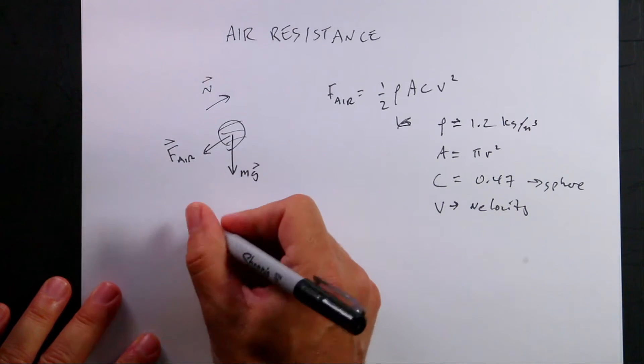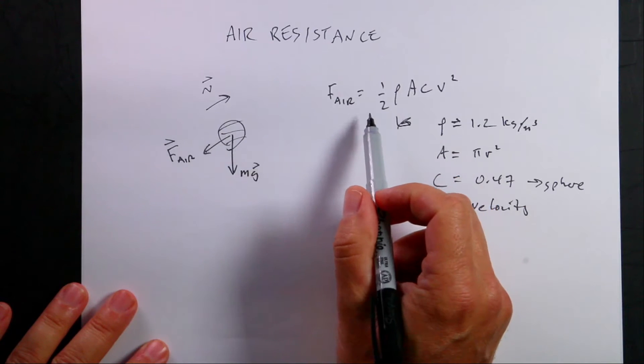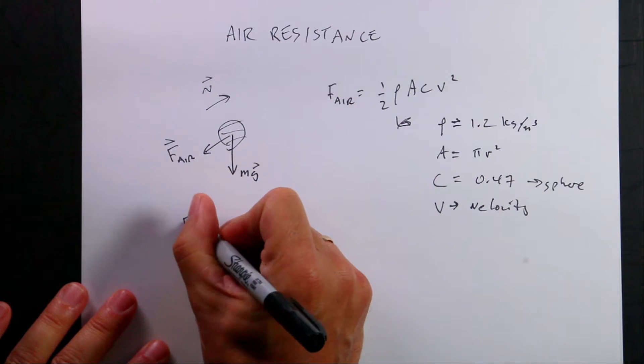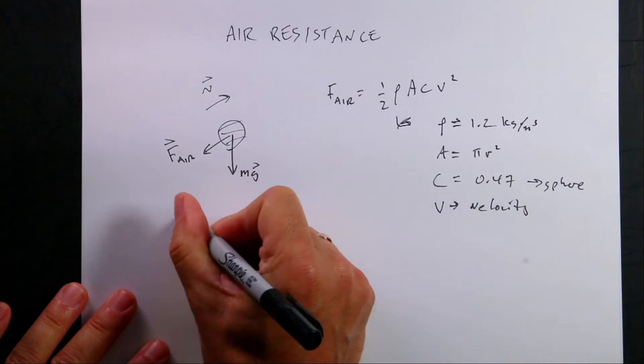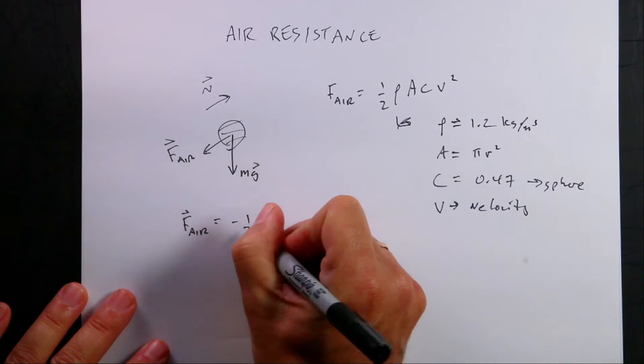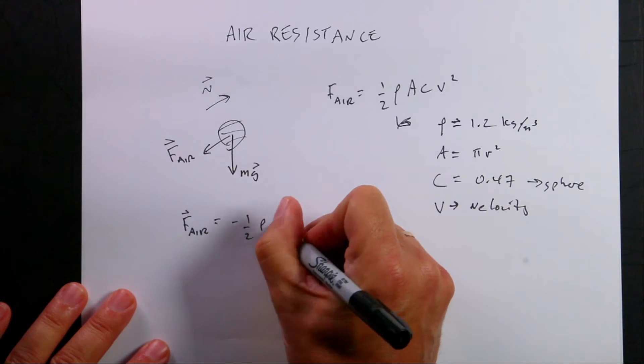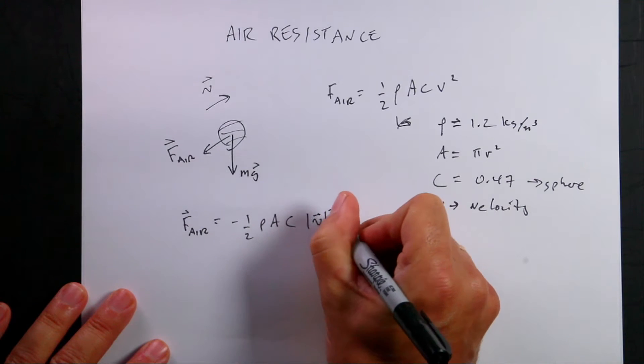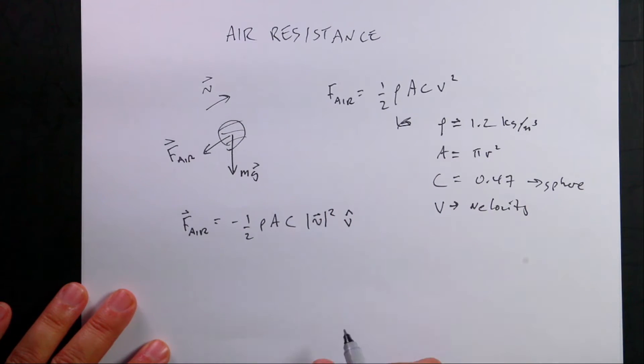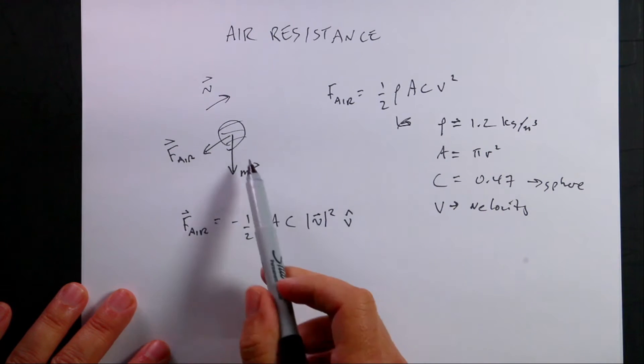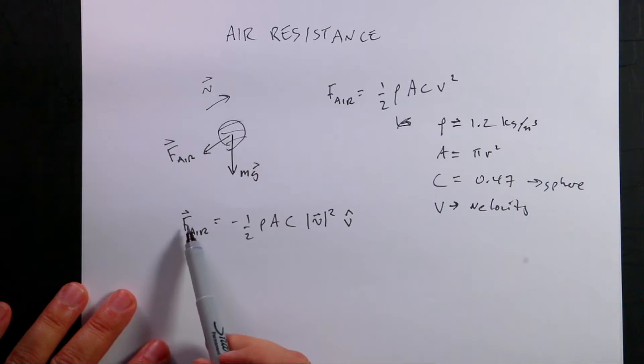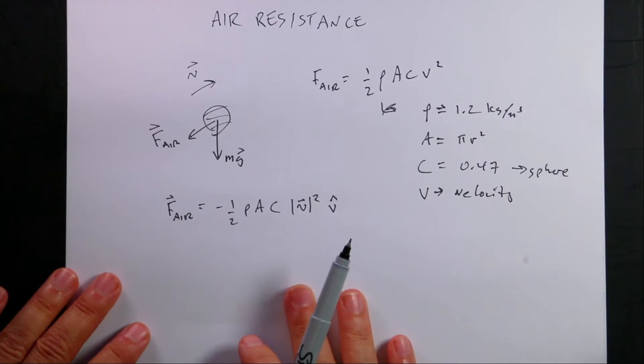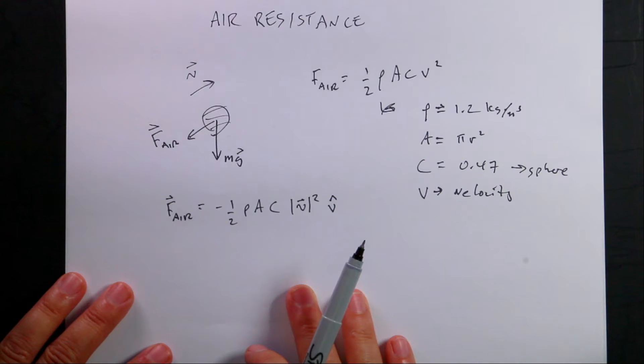So let me write a better model for the air. If I need this v hat here, the unit vector in the direction of the velocity, to make this a vector. And Python cares about vectors, right? If you make something a vector, you can't add things to things that are not vectors. It won't let you do that.